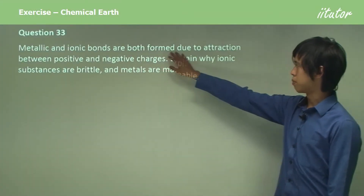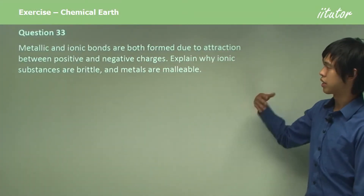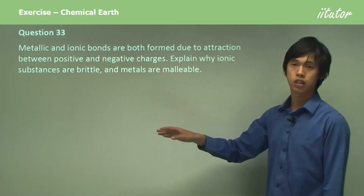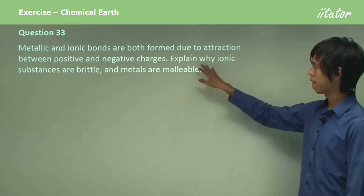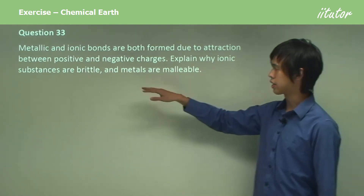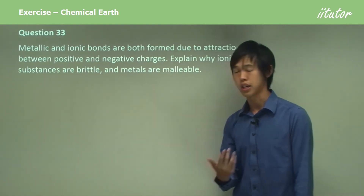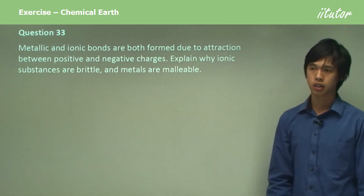Metallic and ionic bonds are both formed due to the attraction between positive and negative charges. Explain why ionic substances are brittle and metals are malleable.